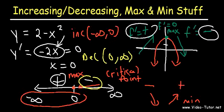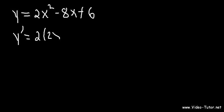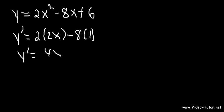So let's try another example for the sake of practice. Let's say y is equal to 2x squared minus 8x plus 6. Feel free to pause the video and find the critical point, any local maximums or minimums, and also find where the function is increasing and decreasing. So first, let's find the first derivative. The derivative of 2x squared is 4x, the derivative of negative 8x is negative 8, and the derivative of a constant is 0. So the first derivative is equal to 4x minus 8.